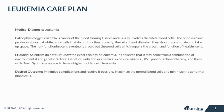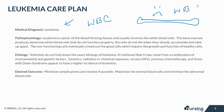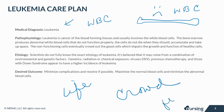Leukemia is cancer of the blood-forming tissues and usually involves the white blood cells. The bone marrow produces abnormal white blood cells that do not function properly. The life cycle of the white blood cell is changed and the cells do not die when they should, thus accumulating and taking up space. The non-functioning cells crowd out the good cells, which impairs the growth and function of the healthy cells. There are many types of leukemia — some types can be cured while others cannot. Treatment is highly dependent on the type of leukemia.